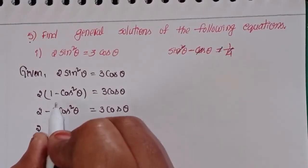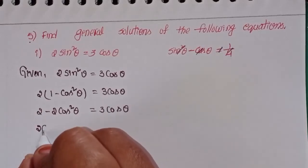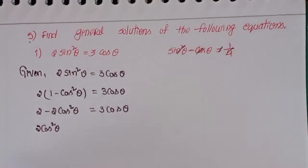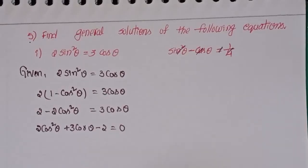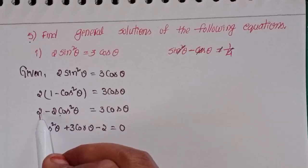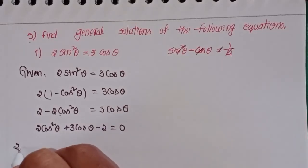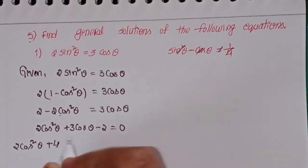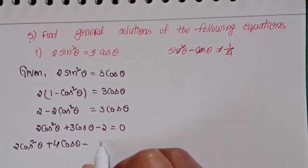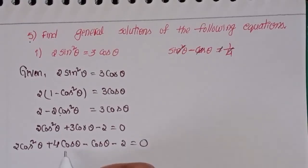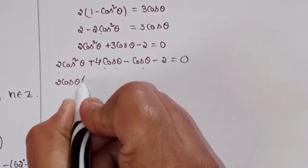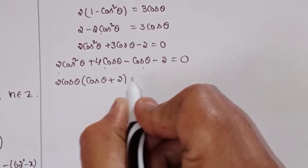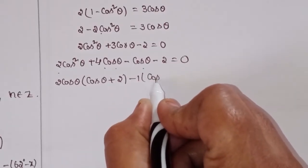Rearranging to the right side, positive terms become negative and negatives become positive: 2 cos squared theta plus 3 cos theta minus 2 equal to 0. We find the factors: 2 cos squared theta plus 4 cos theta minus cos theta minus 2 equal to 0. Taking common factors: 2 cos theta(cos theta plus 2) minus 1(cos theta plus 2) equal to 0.